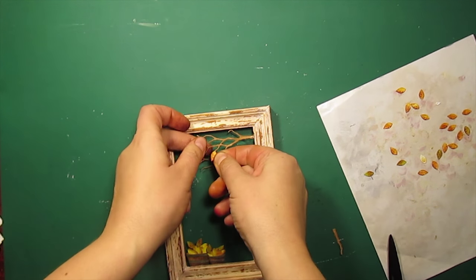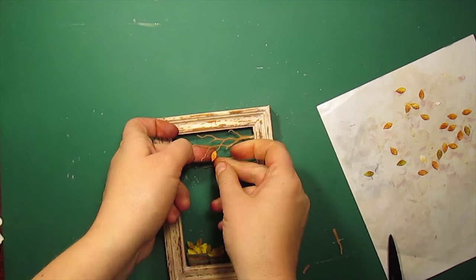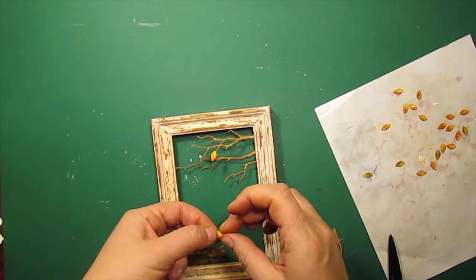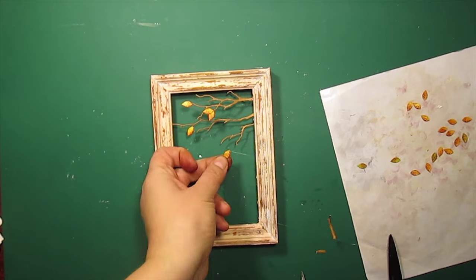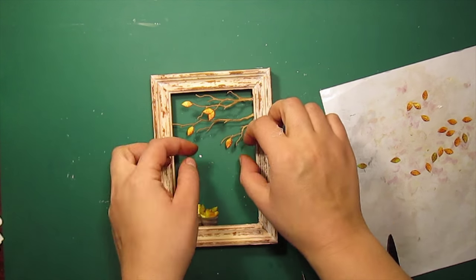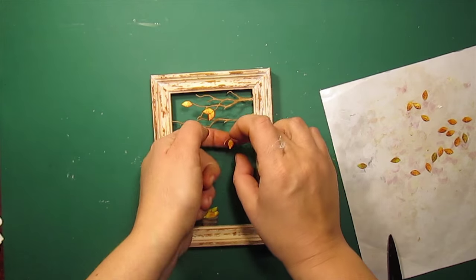Now, I'm adding some leaves to the branches. And I will also attach some of the fallen leaves right on top of the frame.